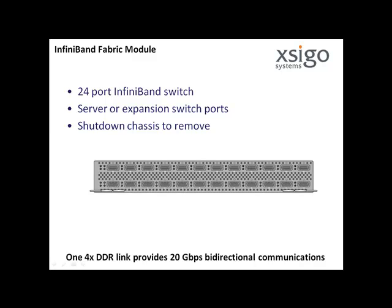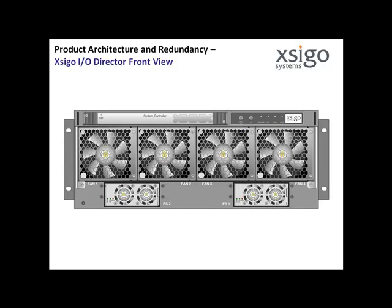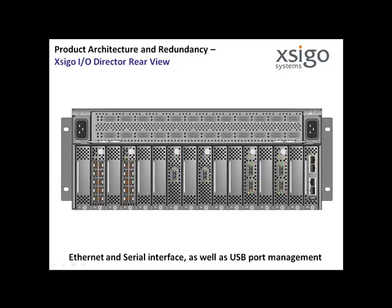The SEGO I.O. Director is a 4U or 2U enclosure with enterprise-class hardware features designed for the data center. These features include redundant load-sharing and hot-swappable fans and power supplies. All cabling is routed to the rear of the SEGO I.O. Director, including power cables, management interface cables, InfiniBand cables for connectivity to the host servers, and Ethernet and fiber channel cables for connectivity to data center resources.